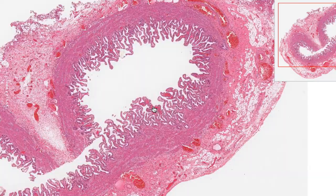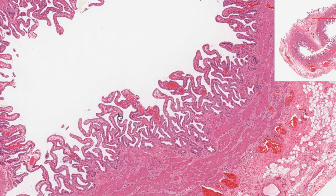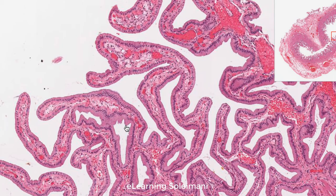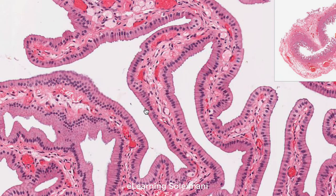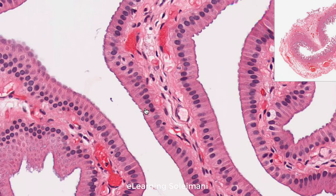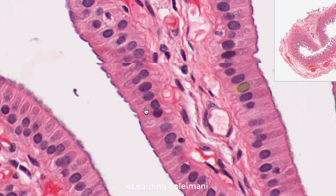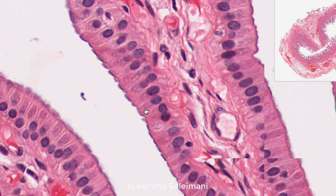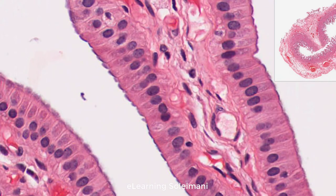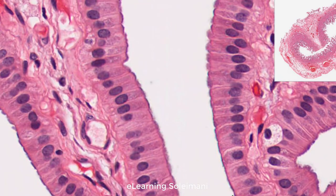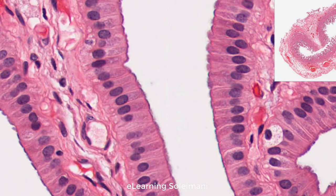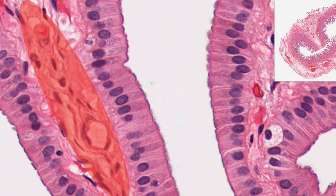The next slide is the gallbladder. Our aim is to describe the simple columnar epithelium. Each cell has more height than other dimensions. Their nuclei are located vertically on the basal parts of the cells. The cells of this epithelium, like others, are anchored on a basement membrane, and the connective tissue is visible underneath it.